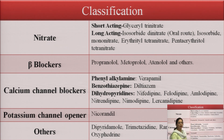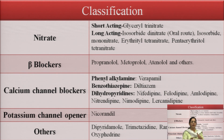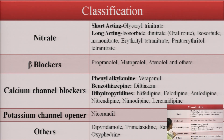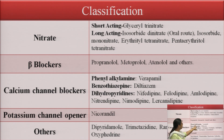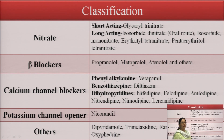The second class of anti-anginal drugs is beta blockers, with examples including propranolol, metoprolol, and atenolol. The third class is calcium channel blockers, which are subclassified by chemical structure into three groups: phenylalkylamines (example: verapamil), benzothiazepines (example: diltiazem), and dihydropyridines (examples: nifedipine, felodipine, amlodipine, nitrendipine, nimodipine, lacidipine, and others).